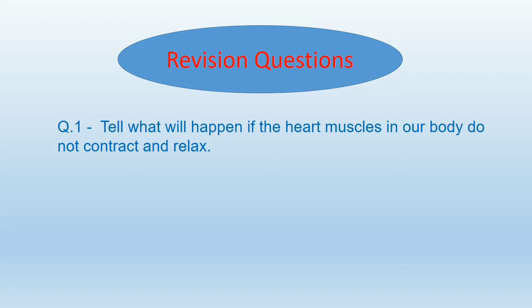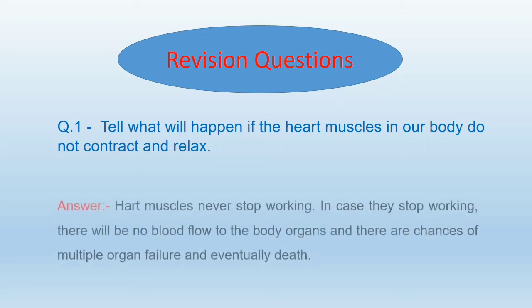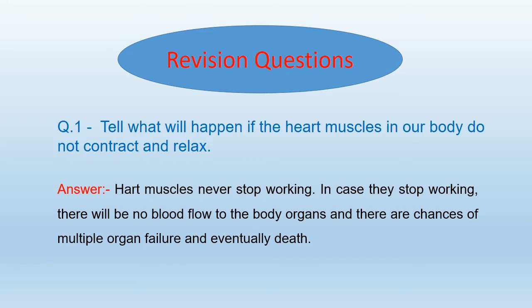Let's revise with some revision questions. Question number 1: Tell what will happen if the heart muscles in our body do not contract and relax. The answer is: Heart muscles work continuously without stopping. When the heart beats, it pumps blood to our lungs and the rest of our body. But in between beats, the heart muscle relaxes as it fills with blood. It relaxes only for a moment after each contraction, but that still counts as resting. However, heart muscles never stop working. If they stop working, there will be no blood flow to the body organs and there are chances of multiple organ failure and eventual death.